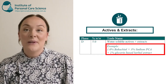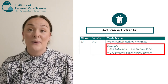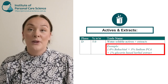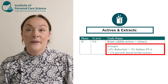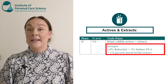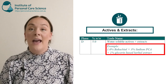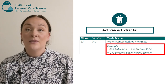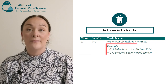As an example, I'm going to use 1% of Bakuchiol as my active — this is a really good natural alternative to vitamin A for anti-aging. Next I'm going to add 3% of sodium PCA, which is a clinically proven humectant. That leaves 1% of my remaining 5%, so I'm going to use a glycerin-based herbal extract for my story.